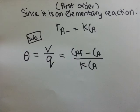Since it is stated that it is a first-order elementary reaction, the rate of reaction can be represented as RA minus equals KCA. We then substitute the RA minus into the design equation.